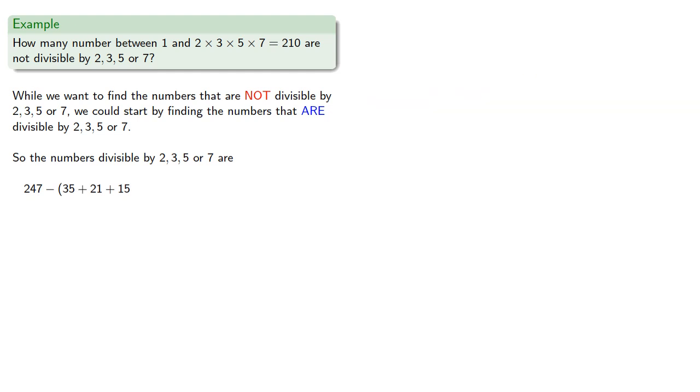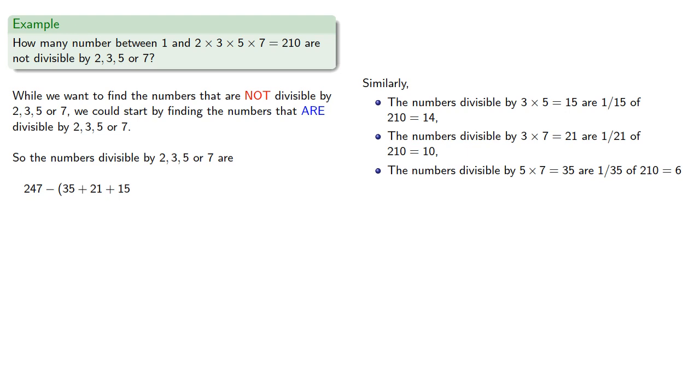And then the other pairwise sets are the numbers divisible by 3 × 5, 3 × 7, and 5 × 7. And so there are more numbers that are counted twice, and we'll subtract these as well.